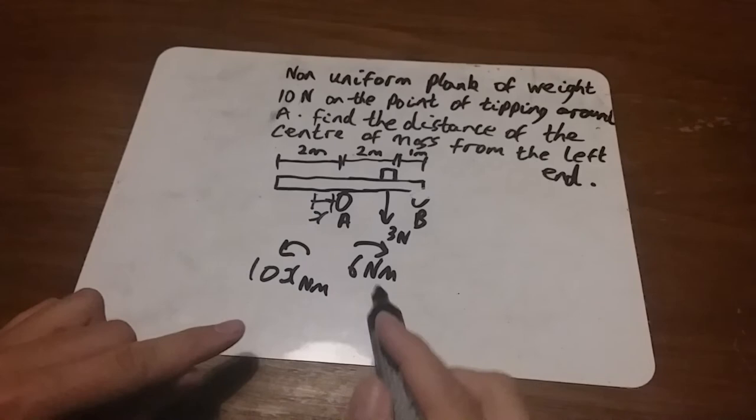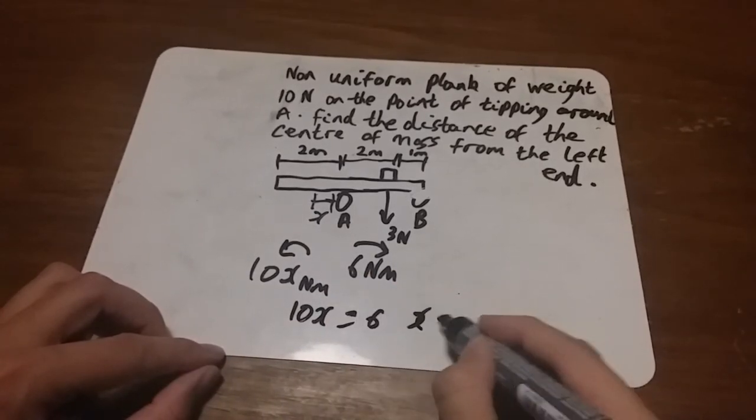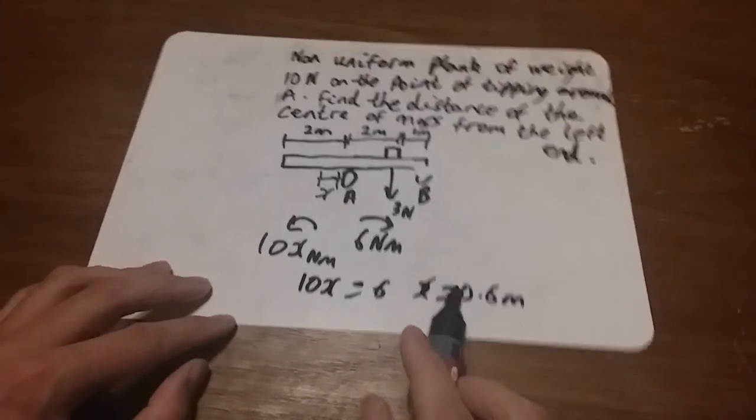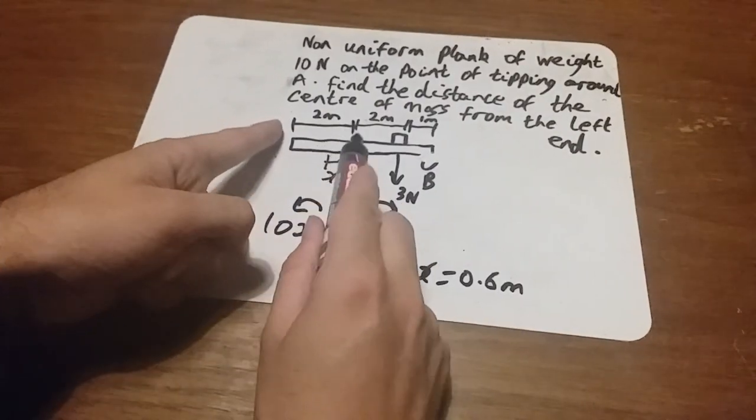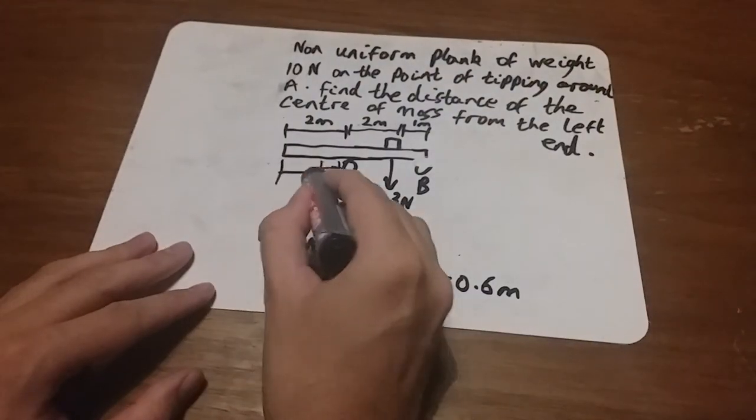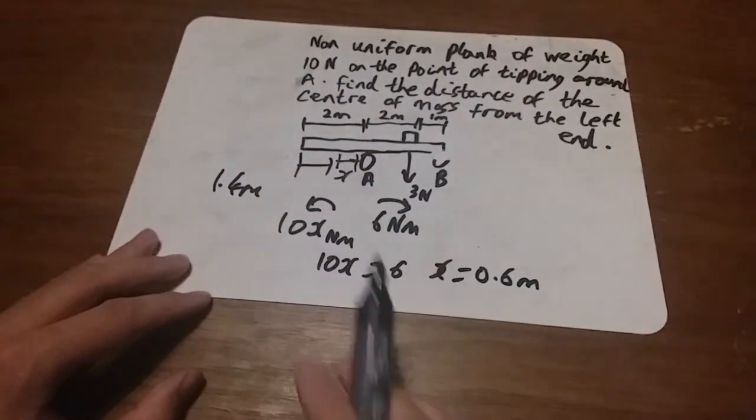They must be balanced, so 10x equals six. Therefore x equals six over 10, or 0.6 meters. We're not quite done yet because we wanted the distance from the left-hand side. If we know that's two meters and this is 0.6, then this distance here would be 1.4 meters.